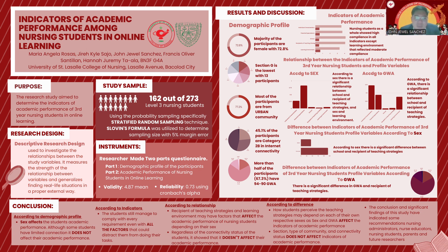For the instruments, it is a researcher-made two-part questionnaire which entails the demographic profile of the participants and the academic performance of nursing students in online learning. For the test of validity, it was given to three nursing research facilitators with master's degree in nursing and it garnered a mean of 4.87. And for the reliability testing, it was given to 30 participants who are not part of the sample size and was computed using Cronbach's Alpha, garnering a value of 0.73.